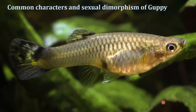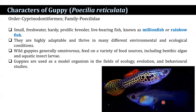What are the common characters and sexual dimorphism of the guppy? Guppy belongs to the order Cyprinodontiformes and the family Poeciliidae. It is a very small, freshwater, hardy fish that is a prolific breeder and a live-bearing fish. It is known as million fish or rainbow fish. They are highly adapted and thrive in many different environmental and ecological conditions. Guppies are omnivorous, feeding on a variety of food sources including benthic algae and aquatic insects. Guppies are used as a model organism in the fields of ecology, evolution, and behavioral studies.